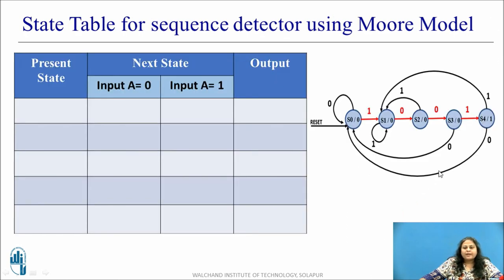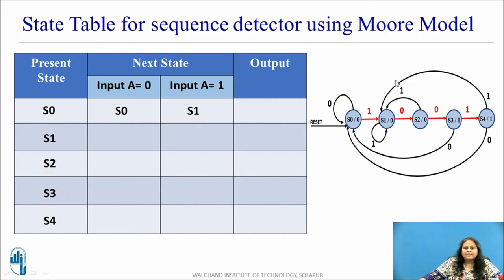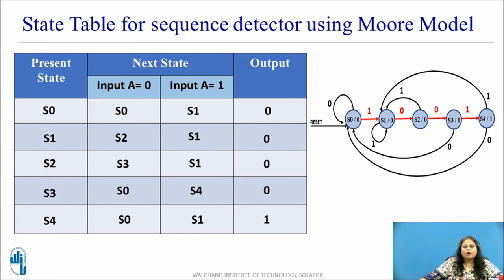Similarly, let us assume all bits have been received: 1, 0, 0, 1 is received. Now if the next incoming bit is 1 then it will assume this is the first bit of the next sequence — so it will wait for the second bit and we know S1 is the state where it waits for the second bit. So in S4 state if the input bit is 1 it will move to S1 state. Else if in S4 the incoming bit is 0 then it will move to S0 state. This is how the state diagram is completed for the Moore model. Once the state diagram is obtained, the state table is derived. With 5 states in the present state column, based on the present state and input value the next state and output are obtained. For example, if present state is S0 and input A = 0 then next state is S0; if input is 1 then next state is S1. Since it is a Moore model, output depends only on the present state, so when present state is S0 the output is 0.